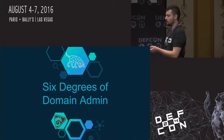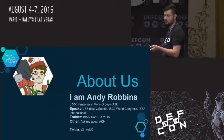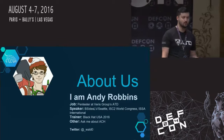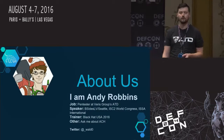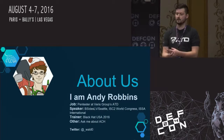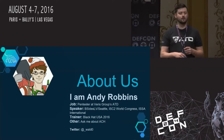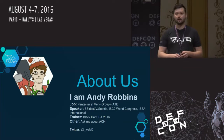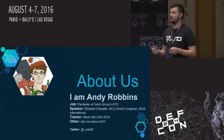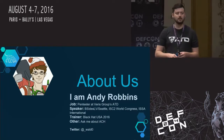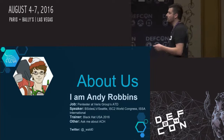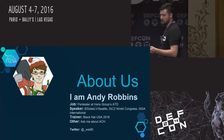My name is Andy Robbins. I've been a professional penetration tester and red teamer for four years. I originally cut my teeth in the financial services industry. All three of us work at Varus Group's Adaptive Threat Division.